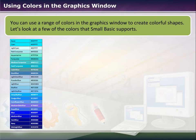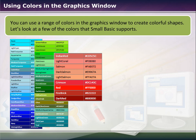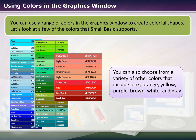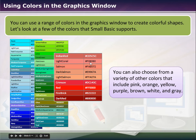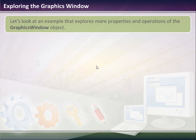There is a wide range of colors in the graphics window to create colorful shapes. These include aqua, cyan, light cyan, pale turquoise, pink, orange, yellow, purple, brown, white, and gray, among many others. The color values correspond to the mixture of pigments — for example, certain values give you Indian Red and others give you Coral. At some point you could just enter those values in directly.